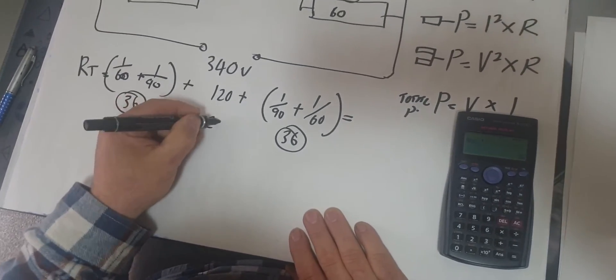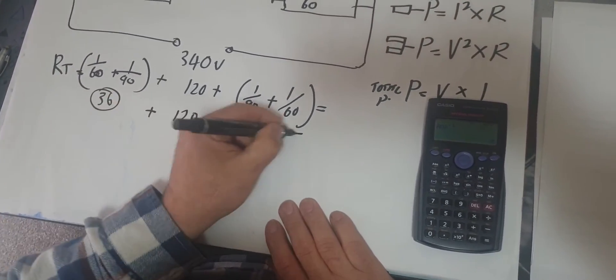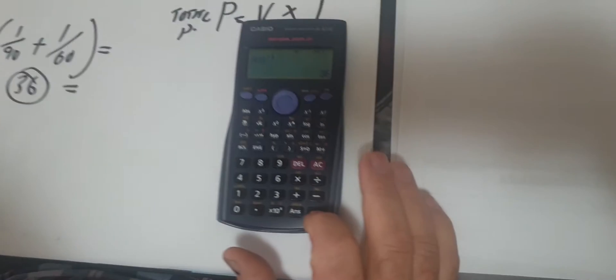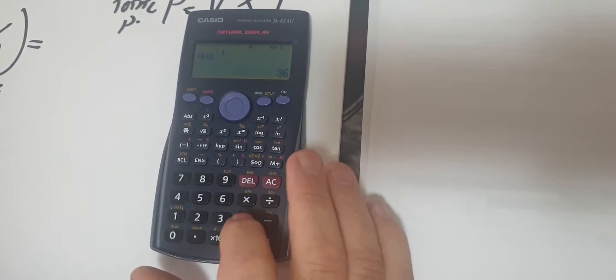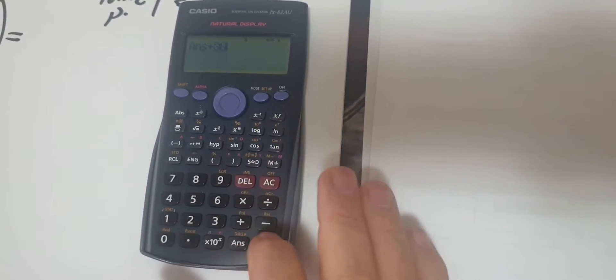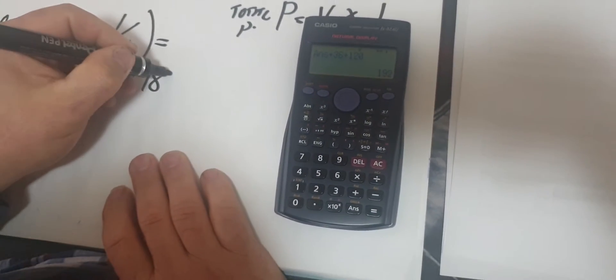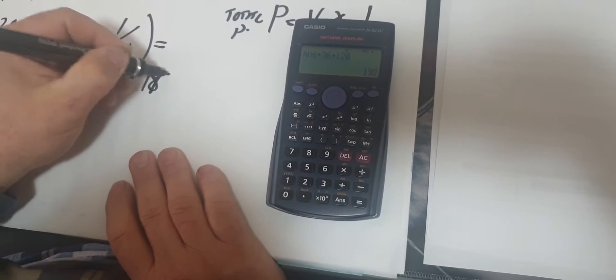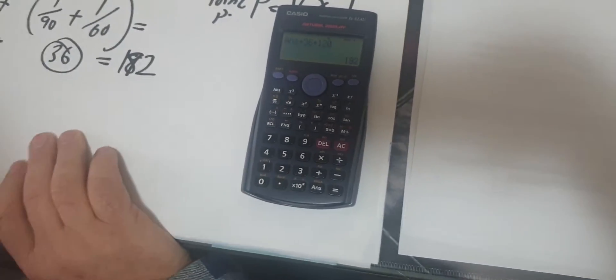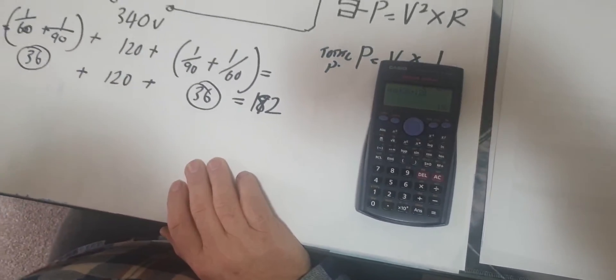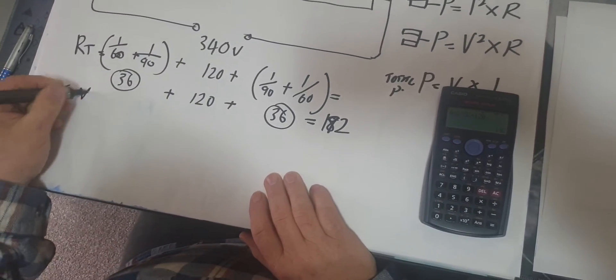So we've got that and 120 in the bottom line there. So 36 plus 36 plus 120 equals 192. My daughter's videotaping at the moment so she's helping me.